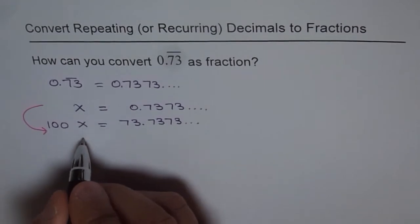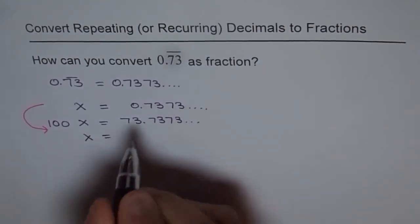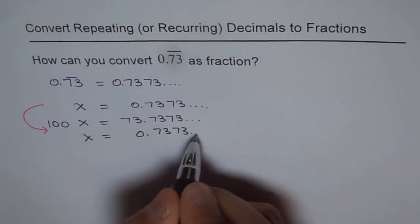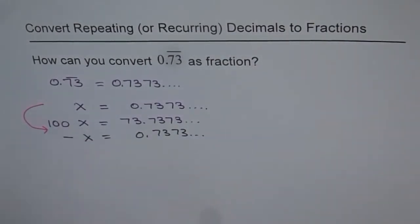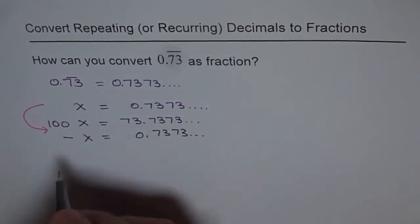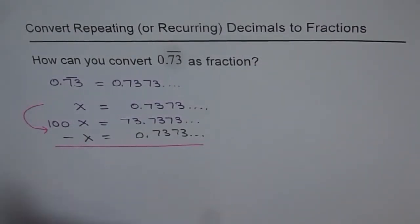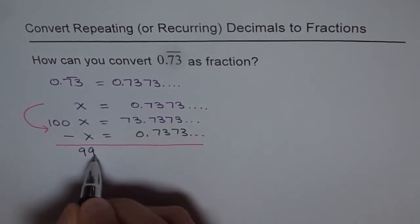So what I'm trying to say is I'll write here x equals 0.7373... recurring and I'll take it away from my equation. So what do I get? Let's see. 100x minus x is 99x.